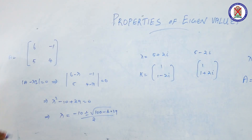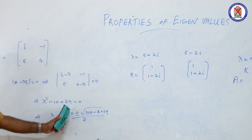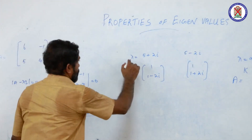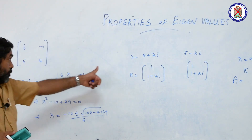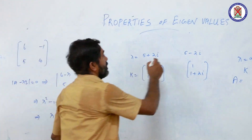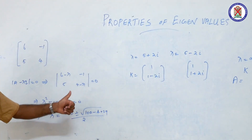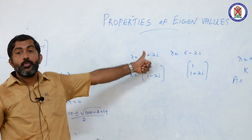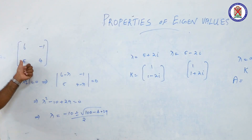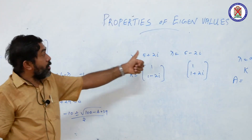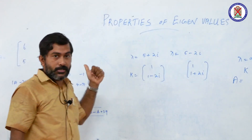Since 100 minus 4 times 29 is less than 0, the roots are imaginary or complex. We obtain lambda equal to 5 plus 2i and 5 minus 2i. The property says that if 5 plus 2i is an eigenvalue of a real matrix, then 5 minus 2i is also an eigenvalue of the same matrix.